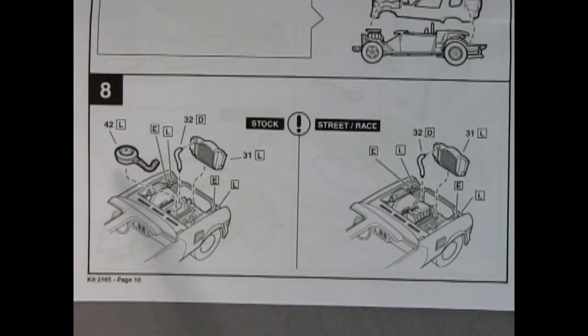Panel 8 shows our air cleaner being installed on top of our engine block for the stock version, and our upper radiator hose and the radiator wall and radiator all drop into place. For the street race version since the blower is in there we just need to put in the radiator hose and the radiator.